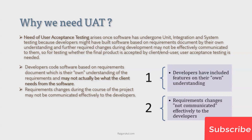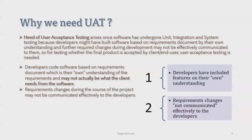The UAT team tests the complete product functionality based on business-related use cases, and these use cases are passed and approved by the end user or product owner only. Developers code software based on the requirement document using their own understanding, and sometimes they might perceive only one angle of the application. Because of that, UAT is a most important component — the software may not actually be what the client needs. Requirement changes during the course of the project may also not be communicated effectively to the developers.